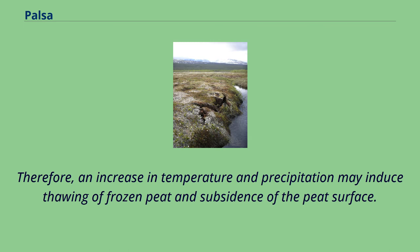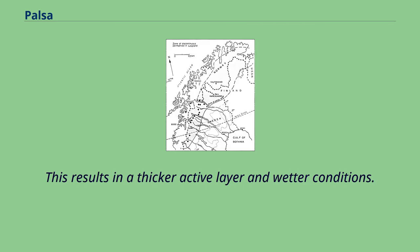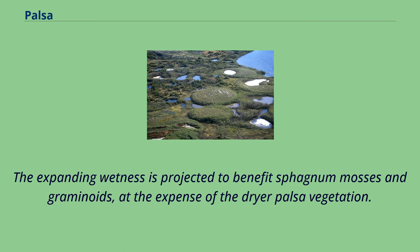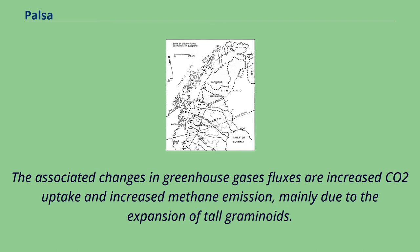Therefore, an increase in temperature and precipitation may induce thawing of frozen peat and subsidence of the peat surface. This results in a thicker active layer and wetter conditions. The vegetation therefore changes in adaptation to the wetter conditions. The expanding wetness is projected to benefit sphagnum mosses and graminoids at the expense of the drier palsa vegetation. The associated changes in greenhouse gas fluxes are increased CO2 uptake and increased methane emission, mainly due to the expansion of tall graminoids.